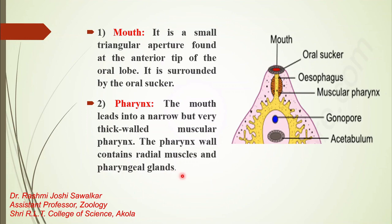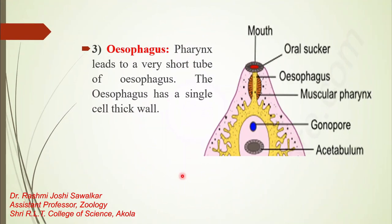After the pharynx, the third part is the esophagus. The mouth leads into the pharynx, and after the pharynx the narrow tubular structure is called the esophagus. The esophagus connects the pharynx to the intestine; it is a short tubular structure with a single-cell-thick wall.